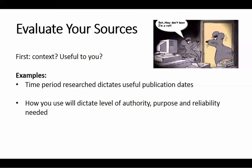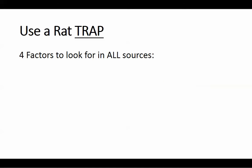Once we get past that, we also want to determine the general credibility of useful sources. I'm going to use a mnemonic here — a TRAP. You use a rat trap to weed out those bad pieces of information. When you're using sources to back up the arguments in your paper, you want to base those arguments on credible, reliable sources. So here are four factors to look at in any piece of information.